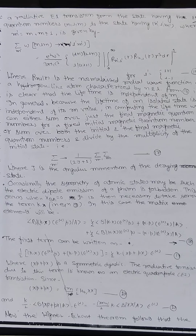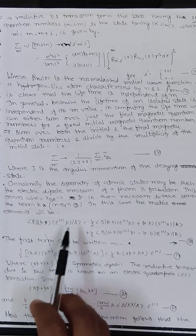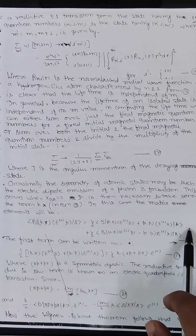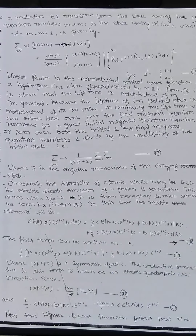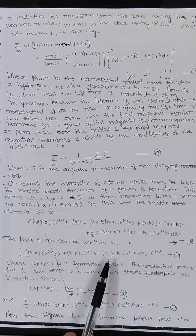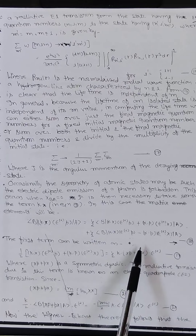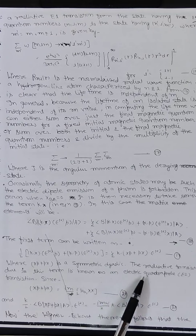Occasionally the symmetry of the atomic state may be such that electric dipole emission of a photon is forbidden. This occurs when x_{ba} = 0. It is then necessary to take the term k·x seriously. In this case the matrix element ⟨b| (k·x)(ε_α·p) |a⟩ can be split into: (1/2)⟨b| (k·x)(ε_α·p) + (k·p)(ε_α·x) |a⟩ + (1/2)⟨b| (k·x)(ε_α·p) - (k·p)(ε_α·x) |a⟩. The first term involves the symmetric dyadic (xp + px), and the radiative transition due to this term is known as the electric quadrupole (E2) transition.